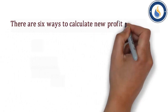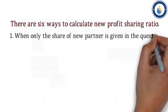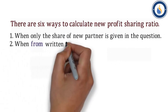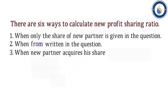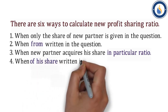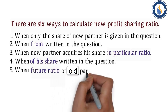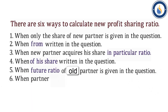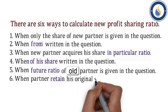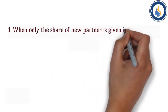There are six ways to calculate the new profit sharing ratio: 1. When only the share of new partner is given in the question. 2. When 'from' is written in the question. 3. When new partner acquires his share in a particular ratio. 4. When a fraction of his share is written in the question. 5. When future ratio of old partners is given. 6. When a partner retains his original share.